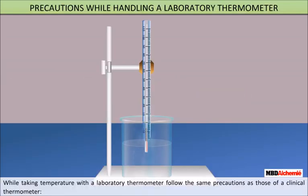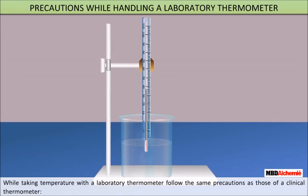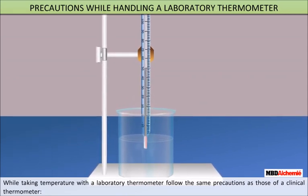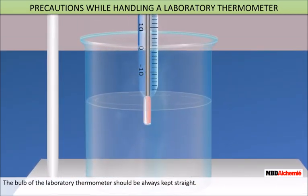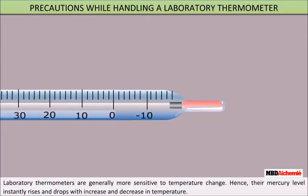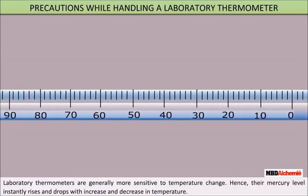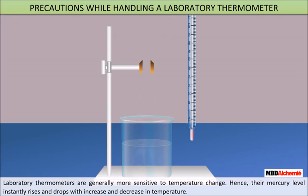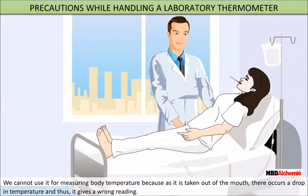Precautions while handling a laboratory thermometer: follow the same precautions as those of a clinical thermometer. The bulb of the laboratory thermometer should always be kept straight. Laboratory thermometers are generally more sensitive to temperature change — hence they instantly rise and drop on increase and decrease in temperature. That's why we cannot use it for measuring body temperature.